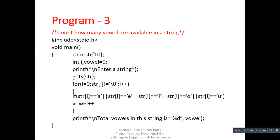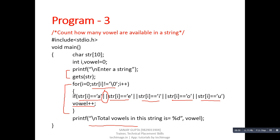The next program counts how many vowels are available in a string. To read a string we use printf and scanf, and for counting we use a loop that repeats until null. Inside the loop there is an if statement with five conditions because there are five vowels: it checks str[i] against a, e, i, o, and u, using the logical OR operator between all five conditions. Since logical OR executes if at least one condition is true, if any condition matches, the vowel count variable is incremented by one. After the loop, printf prints the number of vowels.